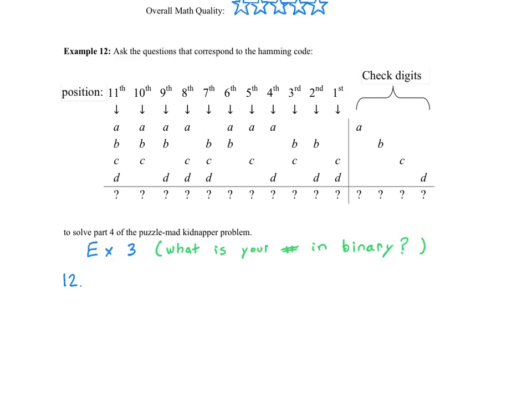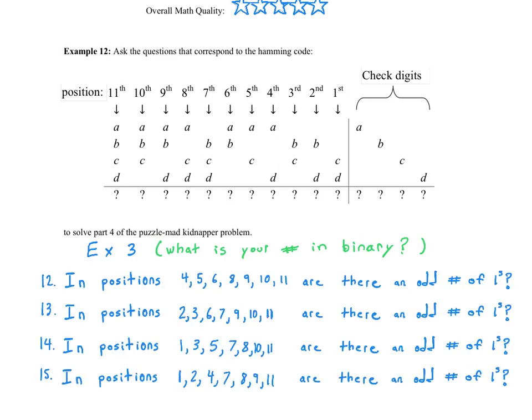So for question 12, what we're going to do is use the Hamming code to say, well, what would this digit right here be? What we want to do is ask, in all the positions that are labeled A, in those columns, do they add up to an odd number of ones? So in binary, in positions 4, 5, 6, 8, 9, 10, 11, all the ones that correspond to A's, are there an odd number of ones? Because if there are an odd number of ones, then we would put a 1 here corresponding to yes to make the grand total even. So let's do the same thing for check digits that correspond to B, C, and D to get questions 13, 14, and 15.